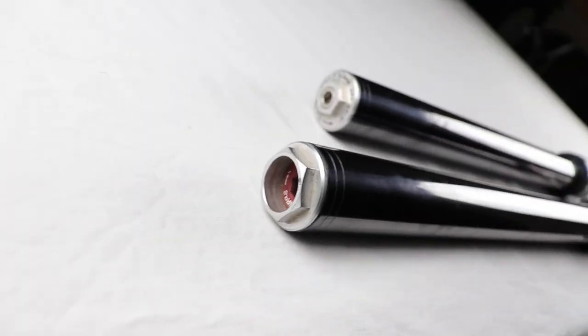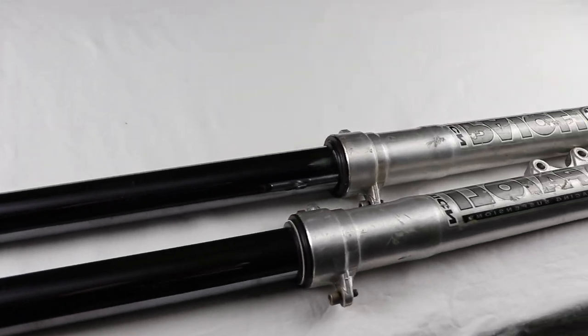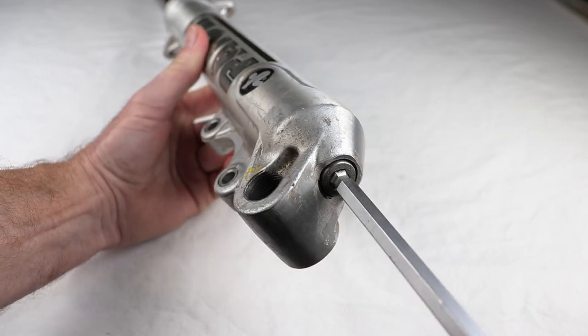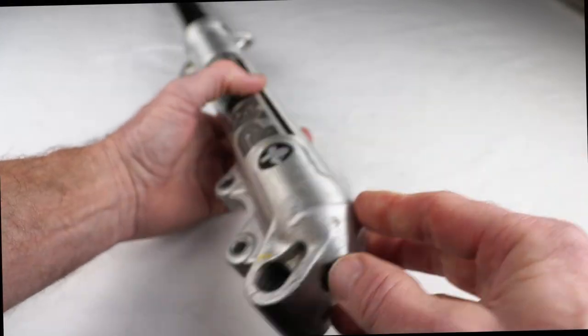Okay, the forks we're working on are these 38 millimeter Piolis from an 06 Sherco, right here. First thing to do is back off the damper retaining screw. Don't take it out, there'll be oil everywhere, just back it off.